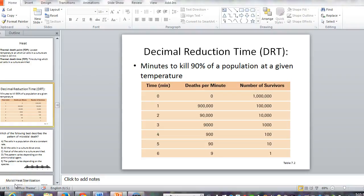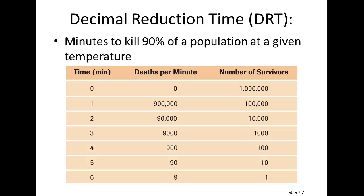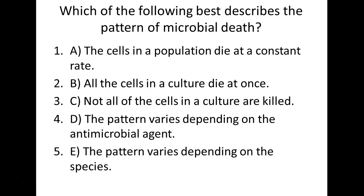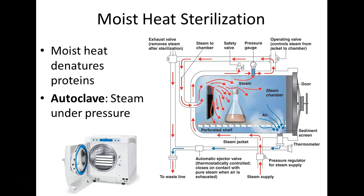This is Chapter 7, Part 4. When we were last listening to this lecture, we were talking about decimal reduction time and making bacteria die, and then we talked about some ways to get that to happen.